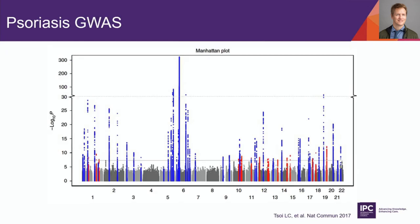This Manhattan plot from psoriasis genetics shows different peaks in blue and red — the red showing new peaks from our 2017 Nature Communications publication. Above the genome-wide significance threshold, there are many different genetic loci predisposing to psoriasis. The biggest signal, extending off the map, is the MHC class I region, where we have the HLA genotypes.